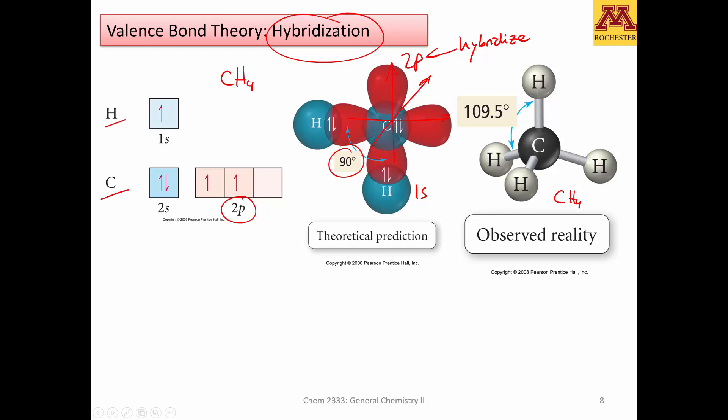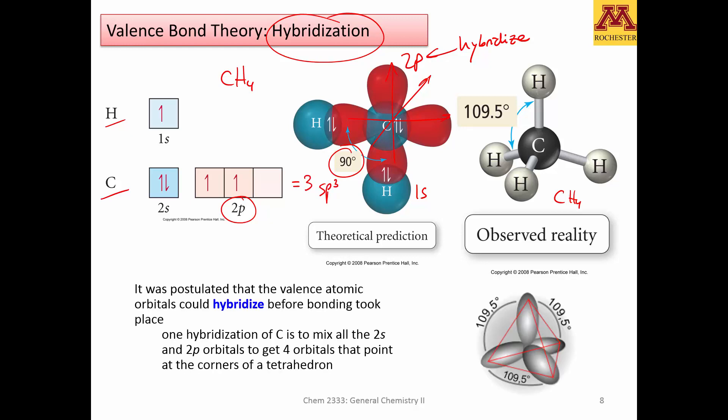So the 2s and one 2s and three 2p will form sp3. That's what you have heard before, and it's a hypothesis, but this hypothesis actually explains the observation that it actually forms a tetrahedron, not a square planar. That would be if the 2p did not hybridize with the 2s.